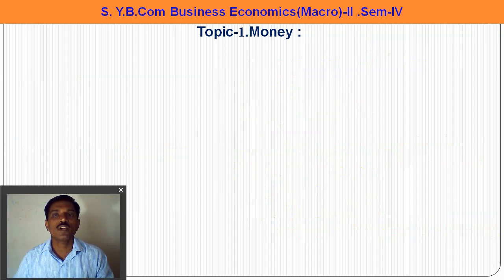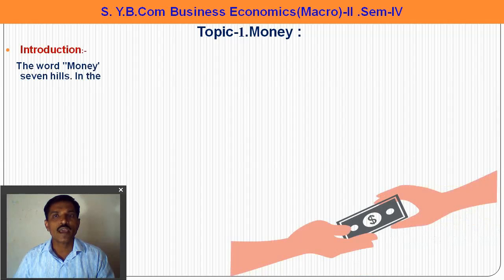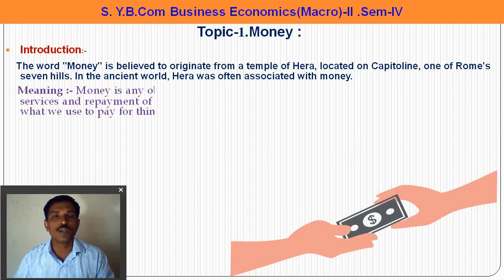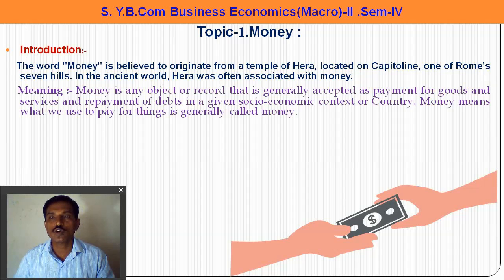So let us begin with money. Money is an important invention invented by man, and it is important in today's world. The word 'money' is believed to originate from the temple of Hera, located on Capitoline Hill, one of Rome's seven hills. In the ancient world, Hera was often associated with money. The meaning of money: money is any object or record that is generally accepted as payment for goods and services and repayment of debt within the socio-economic context of a country. Money means what we use to pay for things — that is generally called money.